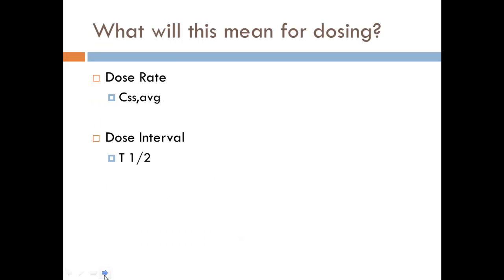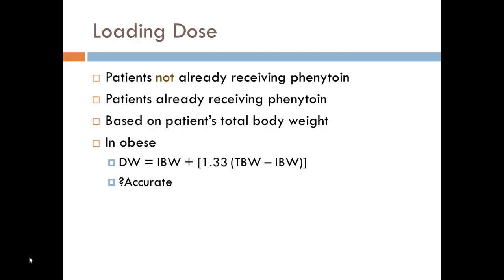What does this mean for dosing? Your CSS average is going to rise exponentially with small changes in dose. Your half-life will increase exponentially with small increases in dose. We can't just put our dose rate over the concentration to make a proportion like we do with other drugs, because that assumes bioavailability and clearance remain constant, and they won't in this case because clearance is constantly changing with concentration.